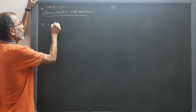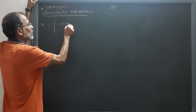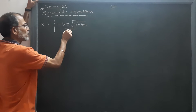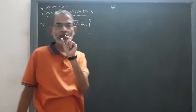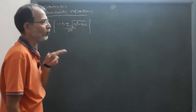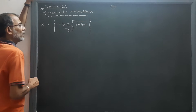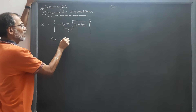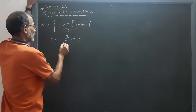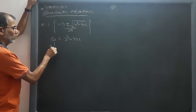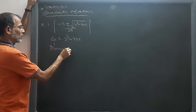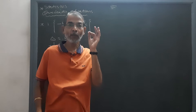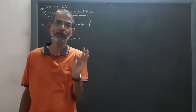In the previous lecture we learned the formula of the roots: minus B plus or minus under root B squared minus 4AC upon 2A. Now in this formula, the term B squared minus 4AC under the root is an important term. Delta is called B squared minus 4AC.